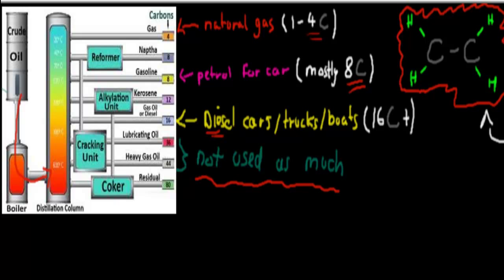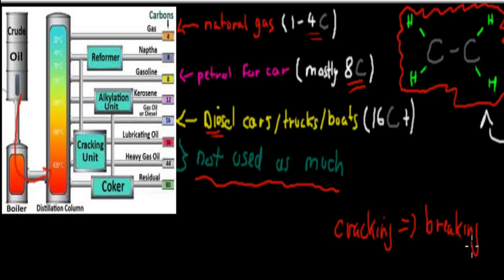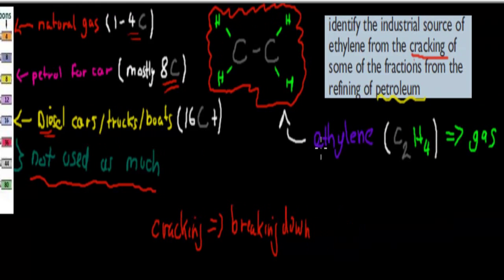And that's called cracking. It says identify an industrial source of ethylene from the cracking — so cracking means breaking down, breaking down of bigger ones into smaller ones. The one we're going to talk about a lot is ethylene. Ethylene is a gas, C2H4. It has double bonds between the two carbons and four hydrogens around it. I would remember this one because it comes up a lot.